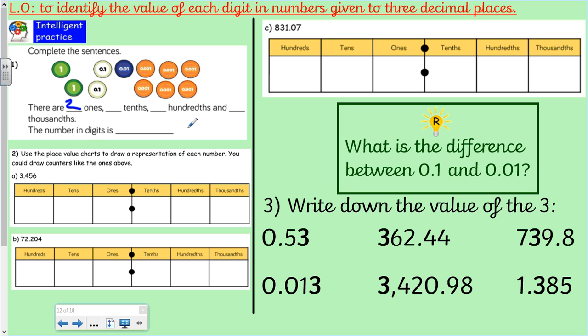Do it however you need to do it. If you're just writing it down on paper, absolutely fine. Whatever you've got, you use. Then use the place value charts to draw a representation of each number. You could draw counters like the ones above. We've got three ones, so I'm going to give you the simple bit. Three ones: one, two, three.